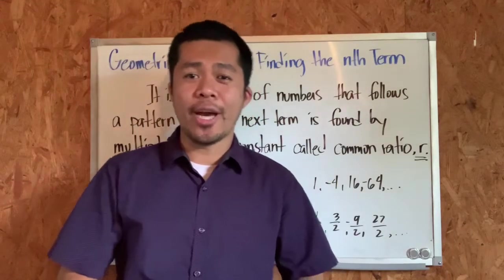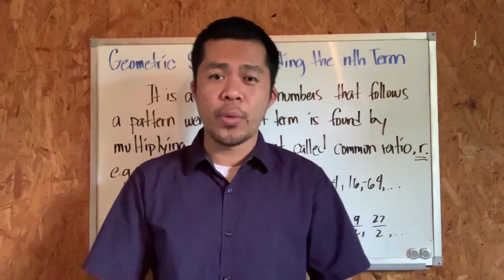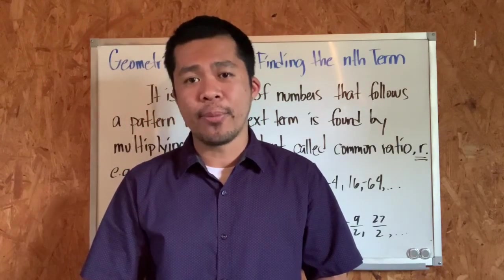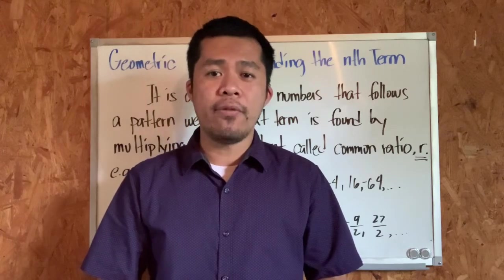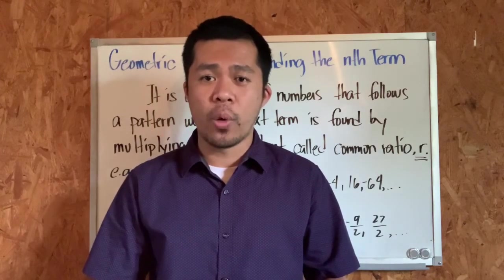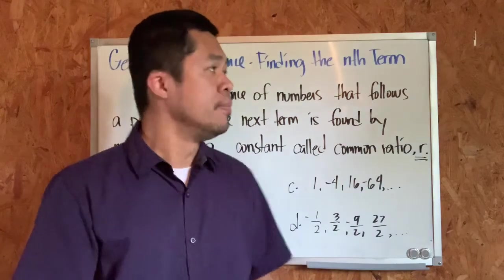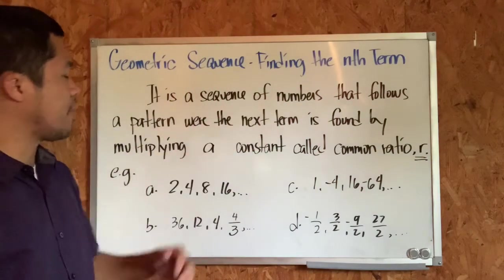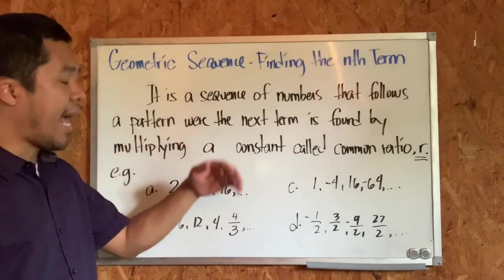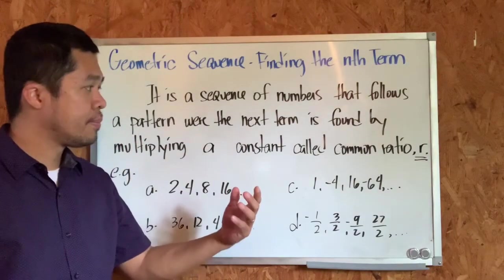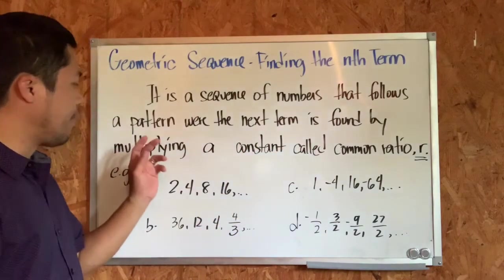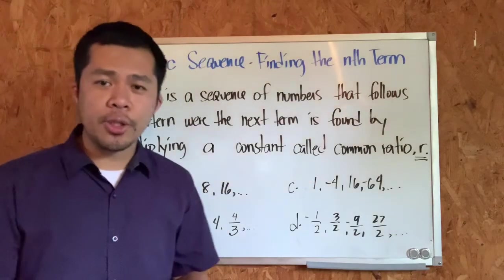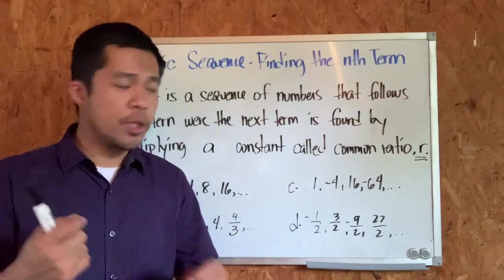Good morning class. For today I will discuss the first topic for this week, which is about the geometric sequence — finding the indicated term or the nth term. Before I give you the examples, let's define first what a geometric sequence is. According to this definition, it is a sequence of numbers that follows a pattern where the next term is found by multiplying a constant called the common ratio.